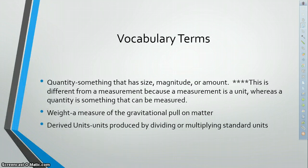So first in vocabulary. Quantity is something that has a size, a magnitude, or an amount. Quantity is different from a measurement because a measurement is a unit, like a teaspoon or a gram, whereas a quantity is something that can be measured, such as temperature or length. Those are quantities.